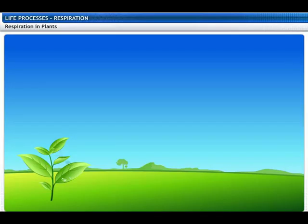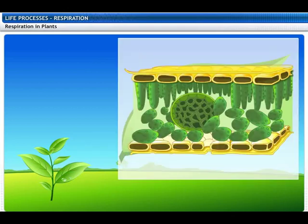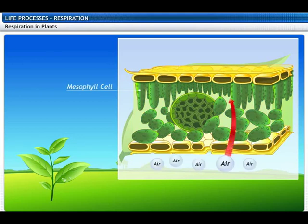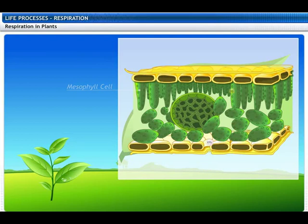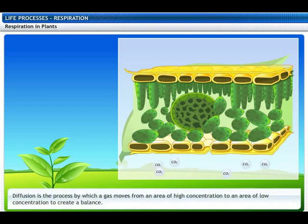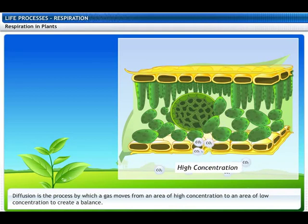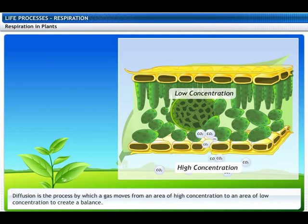Stomata are small openings on the lower surface of leaves. Leaves have large intercellular spaces between the mesophyll cells, ensuring that all cells are in contact with air. Carbon dioxide and oxygen are exchanged through the stomata by diffusion. Diffusion is the process by which a gas moves from an area of high concentration to an area of relatively low concentration until an equilibrium is reached.